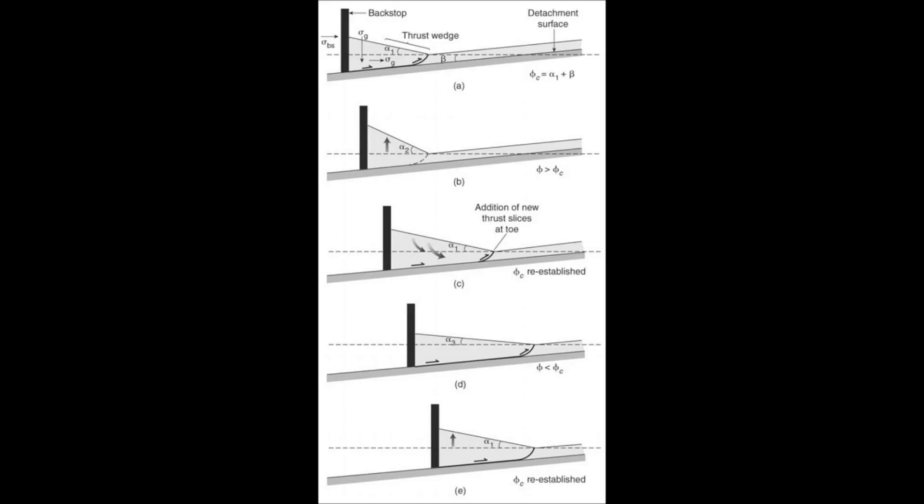The critical taper theory of fault thrust belt mechanics was introduced in 1983 by Davis. The critical taper, or phi-critical in this figure, is defined as the sum of the surface slope angle alpha and the attachment slope angle beta.